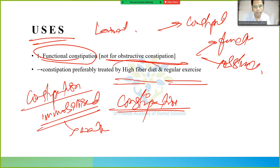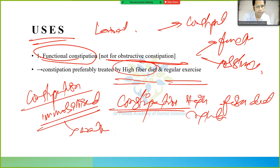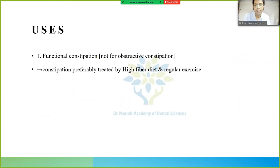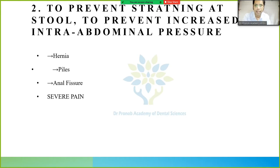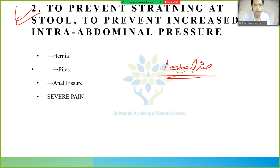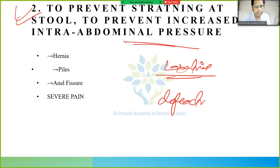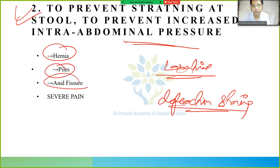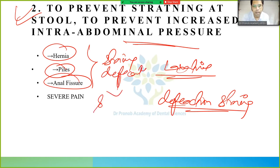If the patient is on a high-fiber diet with regular exercise, constipation is treated naturally. If not, we need laxatives. Another use of laxatives is to prevent straining at stool, to prevent increased intra-abdominal pressure during defecation — in conditions like hernia, piles, and anal fissure where straining causes severe pain.